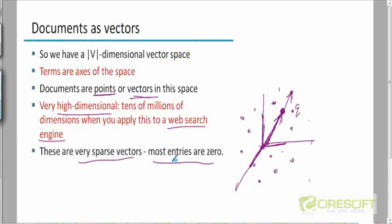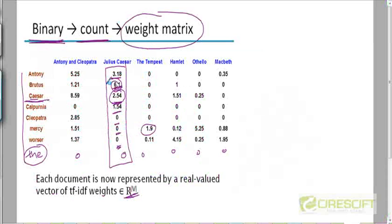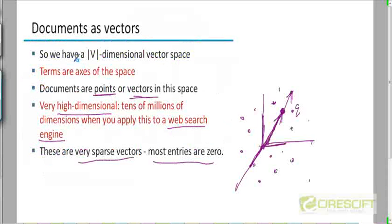What we did last time was we imagined representing each of these vectors in a V-dimensional vector space, where V is the size of the vocabulary. Think of a V-dimensional vector space where each of the axes correspond to one of the terms in the vocabulary. So there are V axes, and each document is a point in this V-dimensional space.